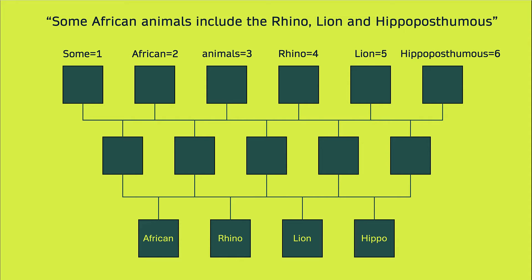You could give each word a unique identifier. So sum is one, African is two, animals is three. And then you could kind of build a model based on that.